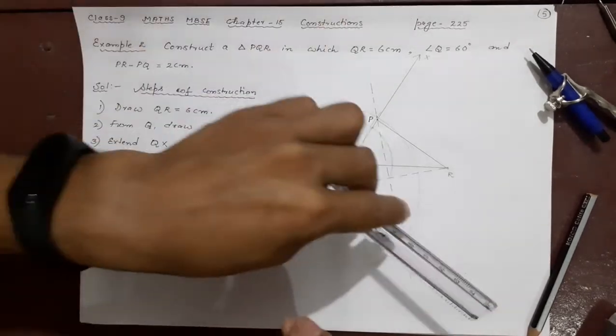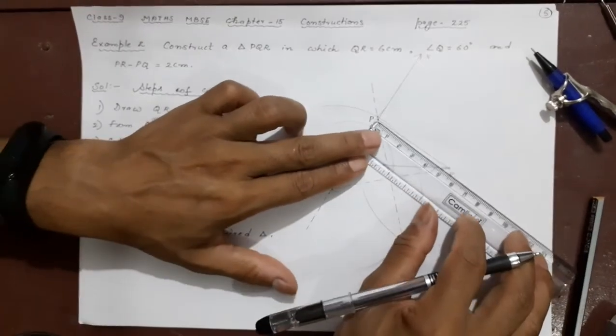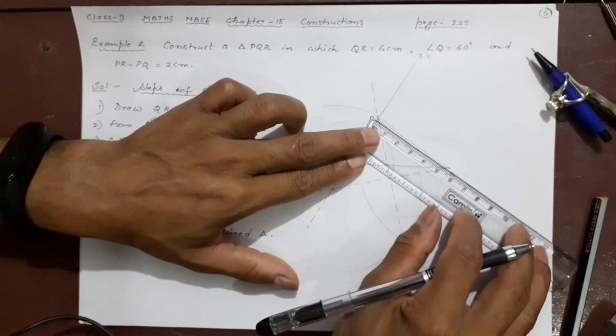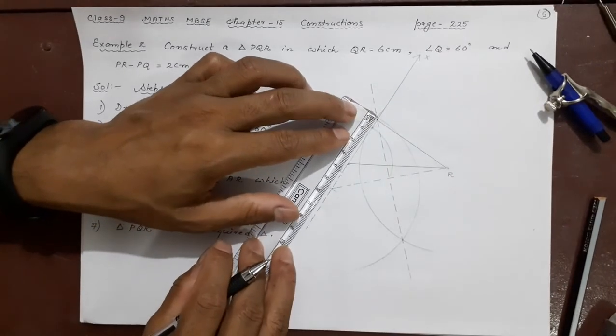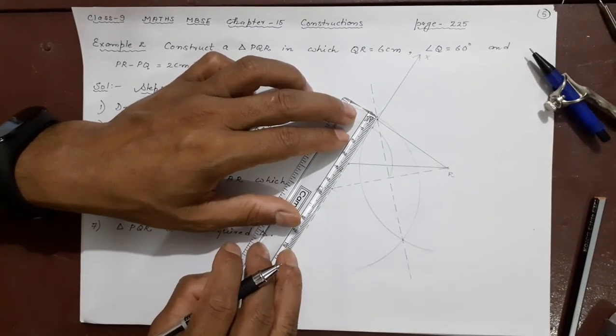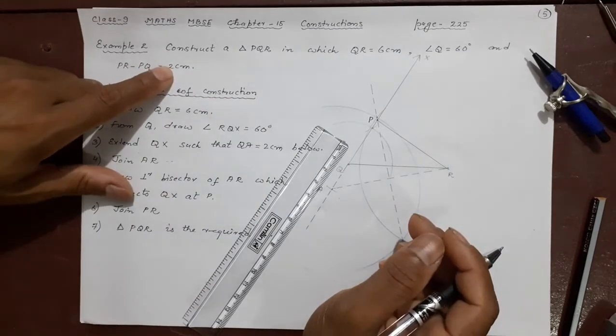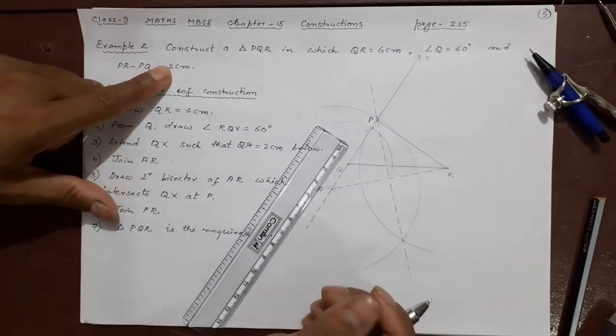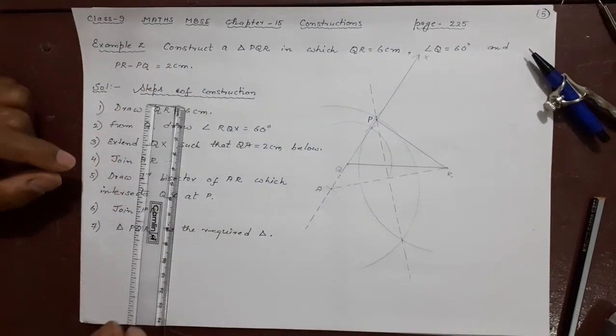So you can check also if you want what is the difference between PR. You can see that it is 5.3 somewhere. It has to be 3 point something because the difference has to be 2 cm. The angle you have already carefully done you can check it with your protractor as well. Thank you.